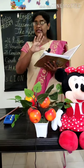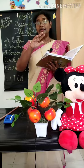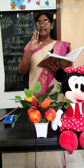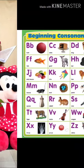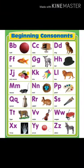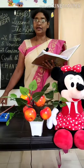Total 26 letters are there. 5 letters are vowels and the remaining 21 letters are called consonants.